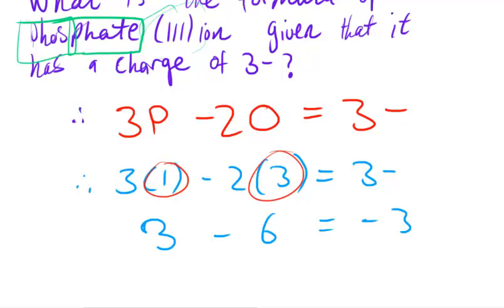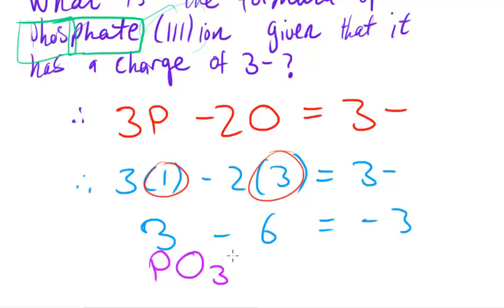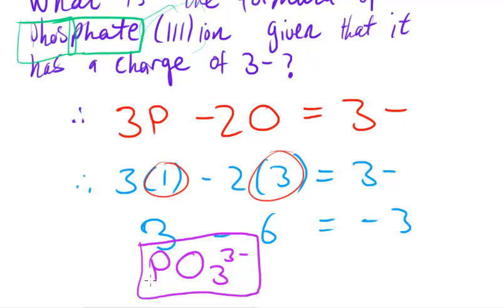Therefore, from this equation, we know there is one phosphorus atom and three oxygen atoms. So the formula of this particular compound ion is PO3 with an overall charge of three minus. That is the formula of the phosphate ion. Hope this video was helpful, and if you have any questions, let me know.